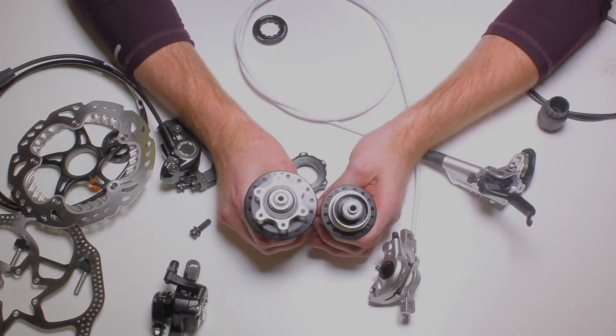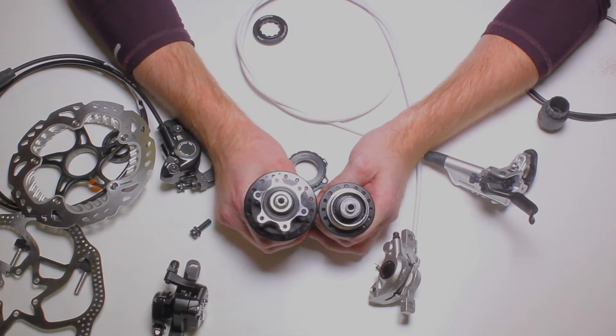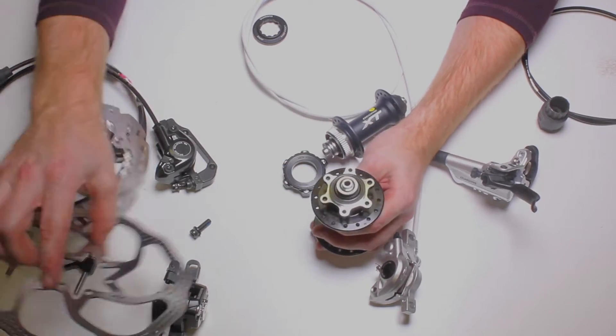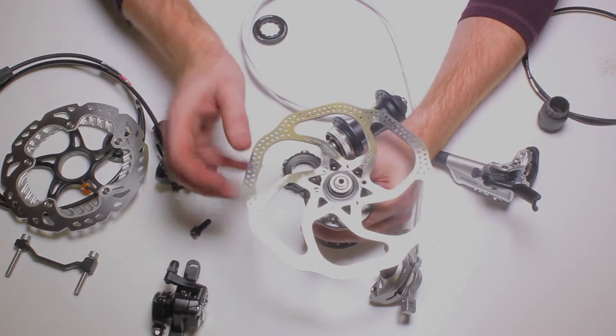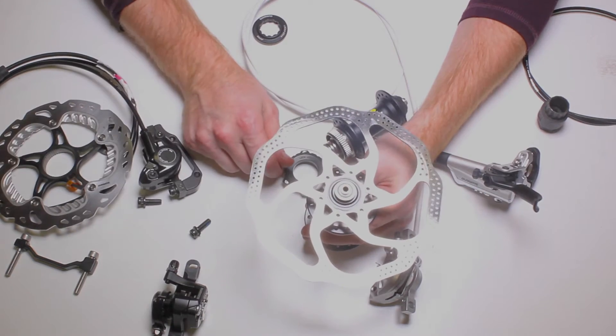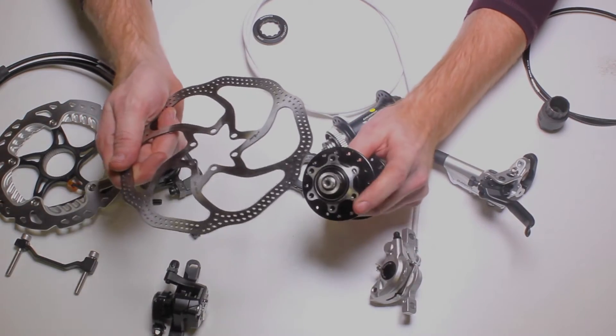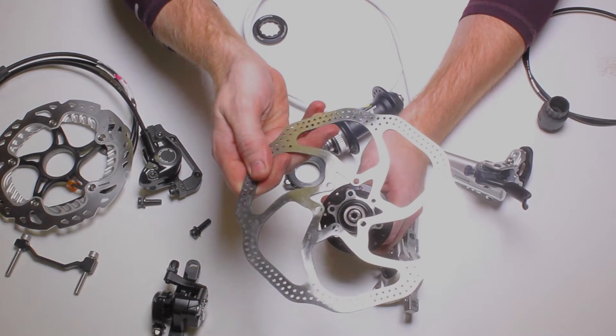The first step in compatibility is making sure that your rotors will fit your hubs. This happens to be a six bolt. This has to be a six bolt rotor. It's a pretty simple concept. You just bolt it in place with those six bolts. This type of a hub is only compatible with six bolt rotors.